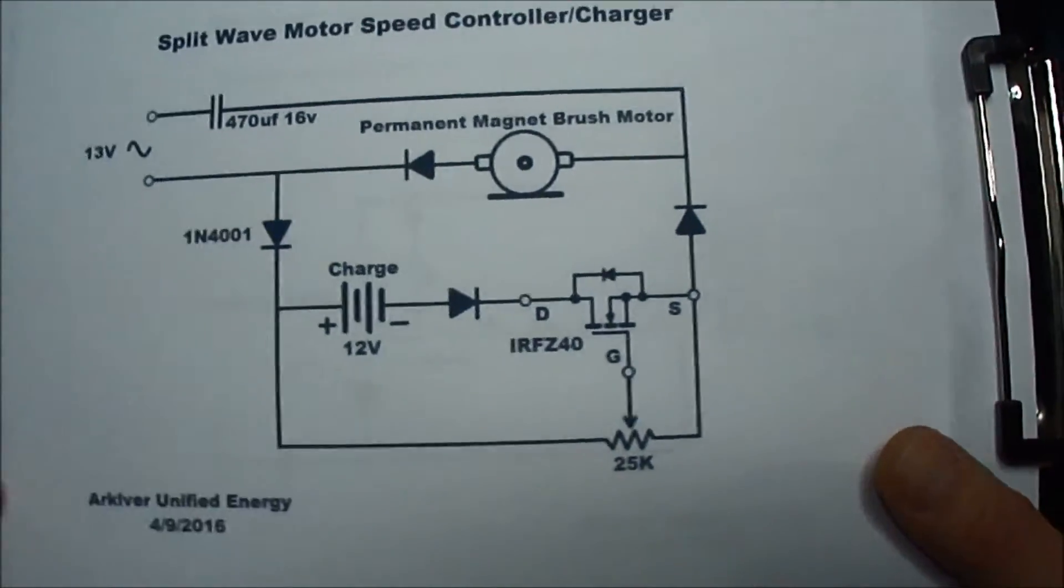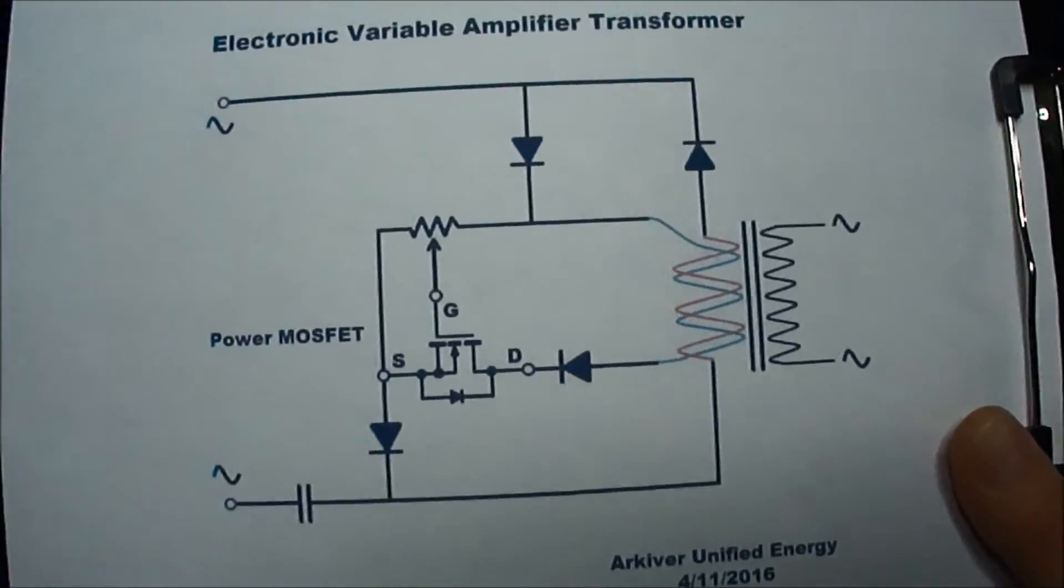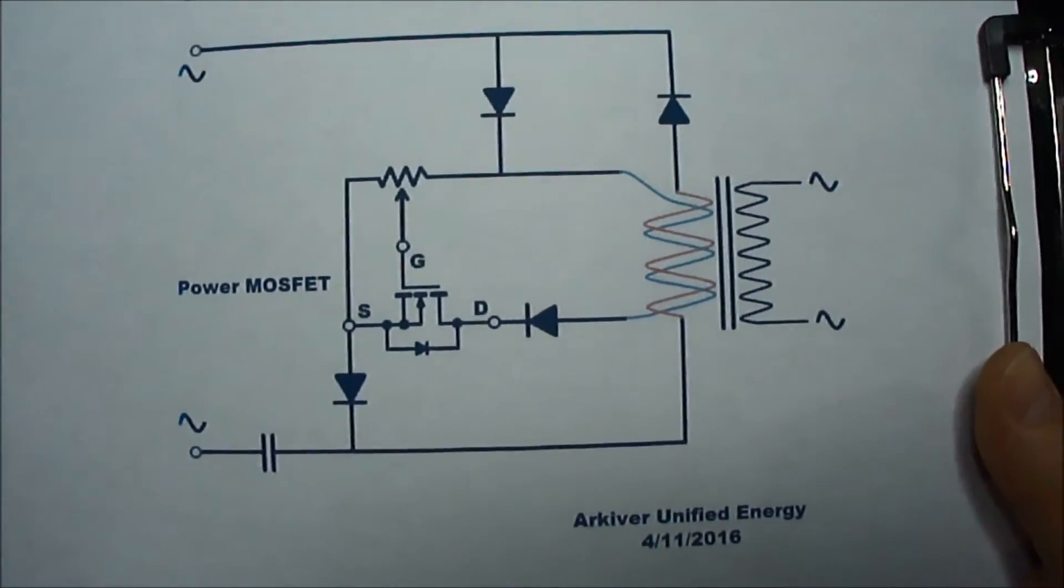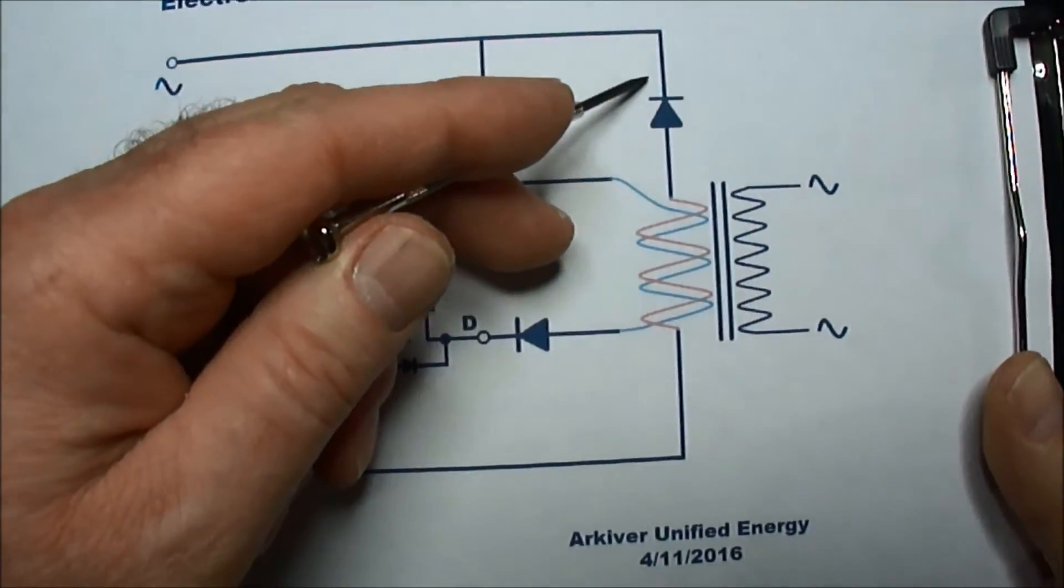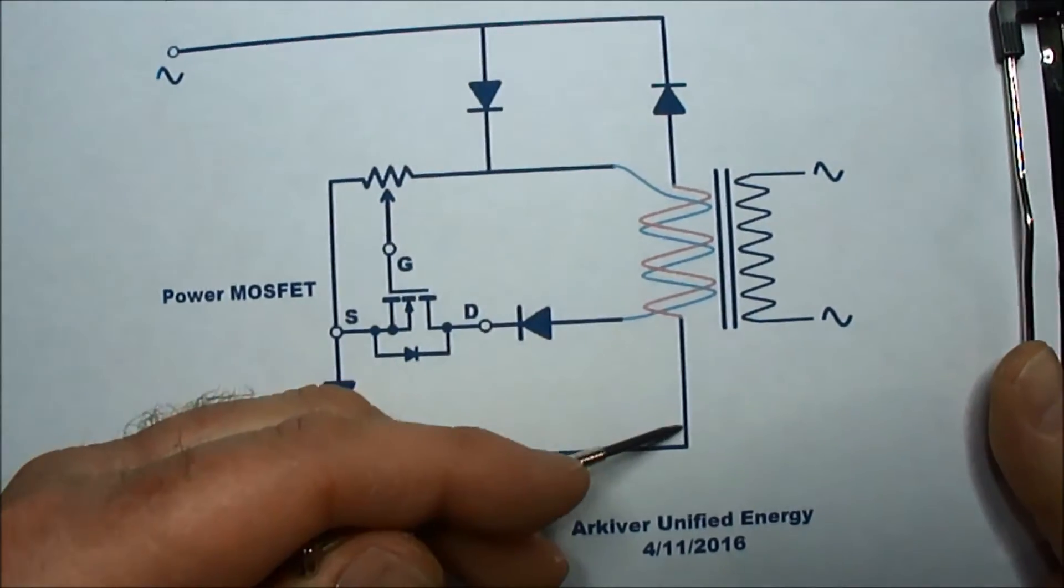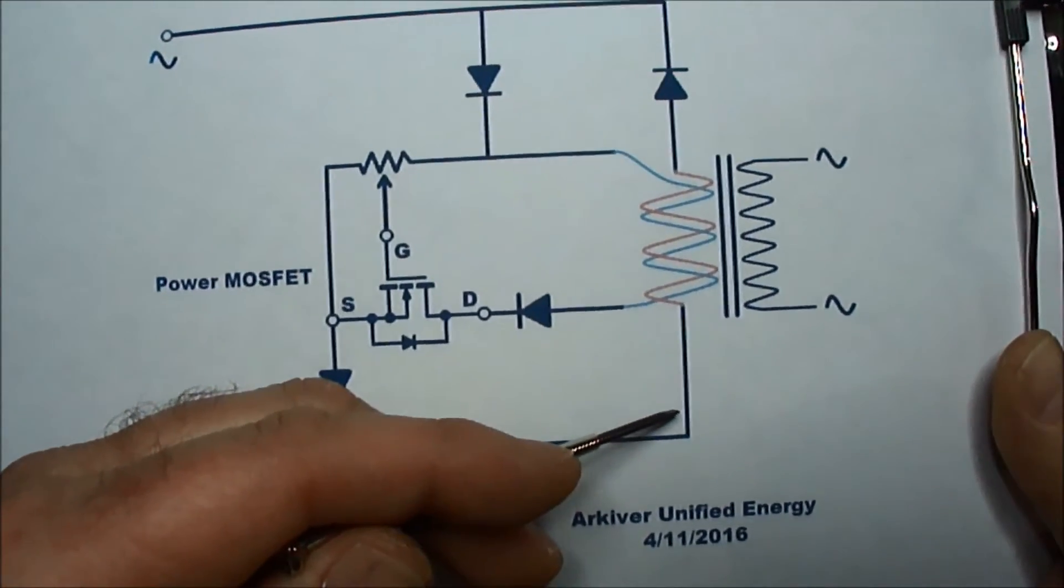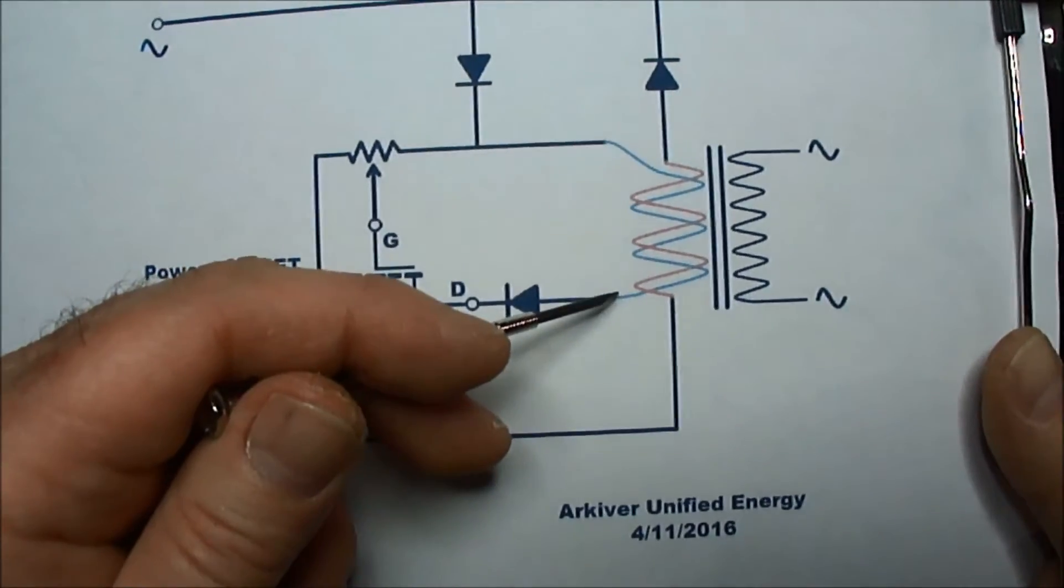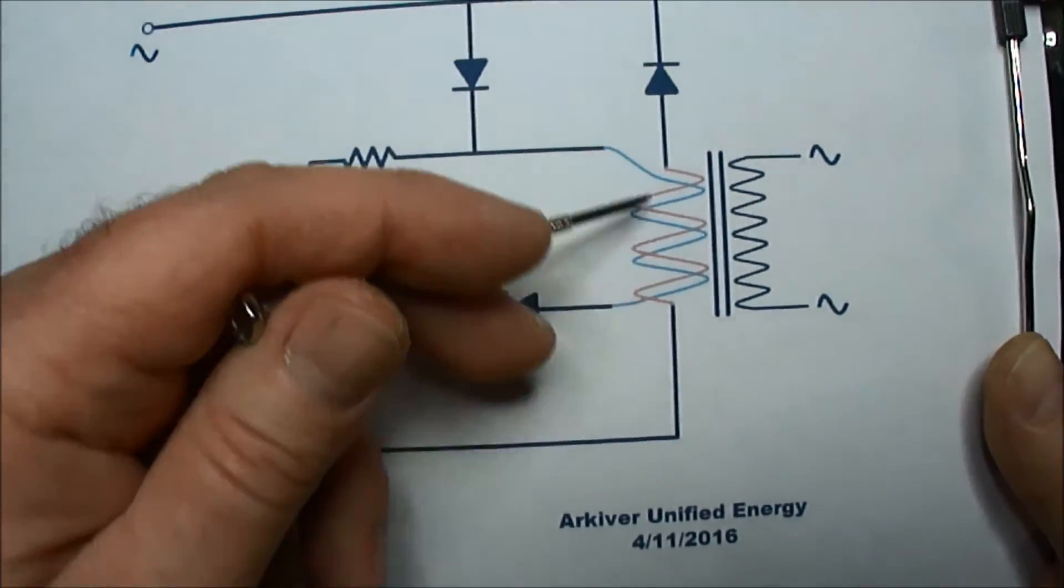So I got thinking this could probably be used in a transformer with a bifilar primary. So half of the AC wave is going through the coil in one direction in one wire, and then the other half goes back through the other wire in the opposite direction.